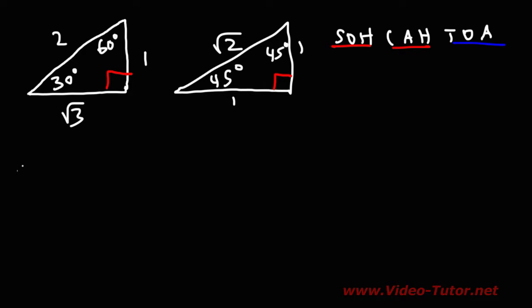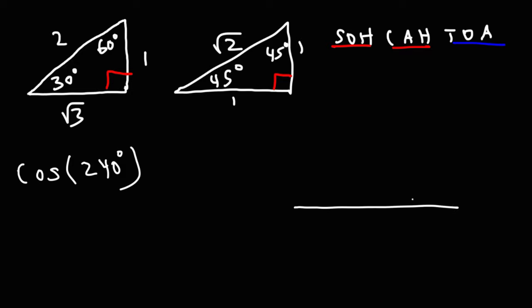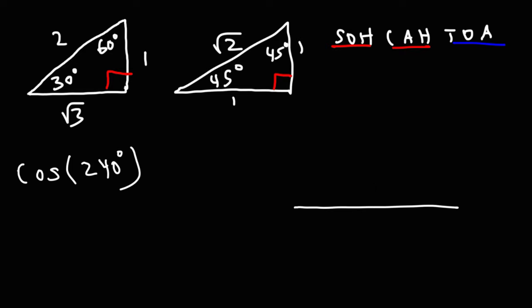Next, let's try cosine of 240 degrees. Let's begin by drawing a reference triangle. Marking 90, 180 — 240 should be somewhere past 180. The difference between 240 and 180 gives us our reference angle, which is 60.